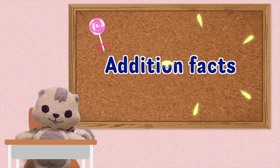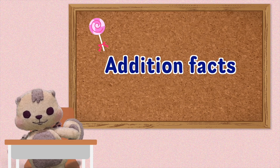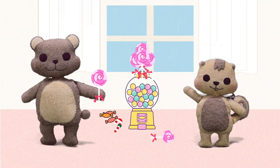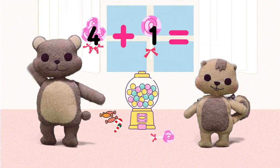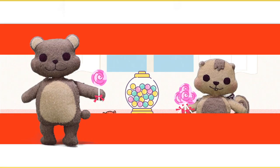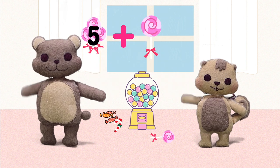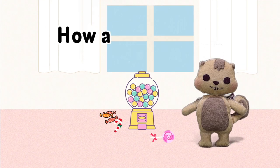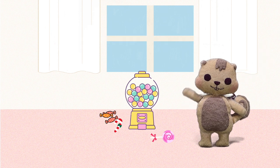Learn our addition facts! Let's do addition together! 4 lollipops plus 1 lollipop: 4 plus 1 equals 5. 5 lollipops plus 1 lollipop: 5 plus 1 equals 6. How about 6 plus 1? 6 plus 1 equals 7.